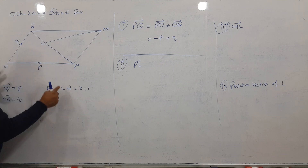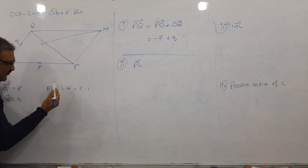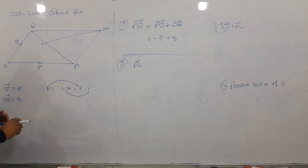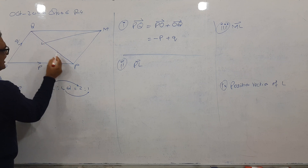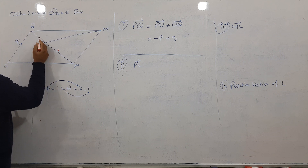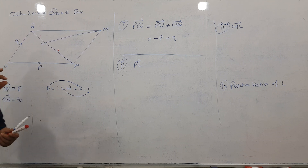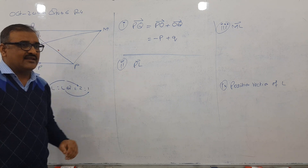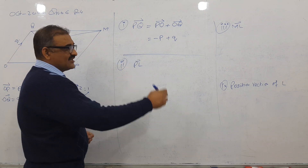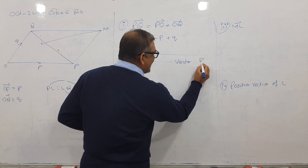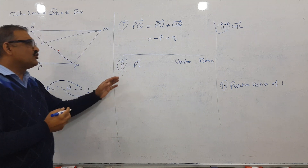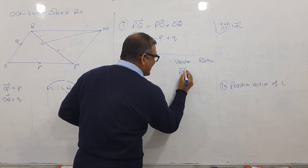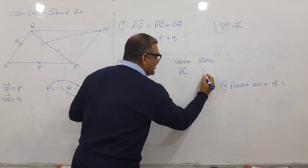Now for vector PL. Looking carefully, this vector has a ratio of 2 and this vector has a ratio of 1. So P to L is 2 parts and L to Q is 1 part. I will teach a technique called the vector ratio technique. Write two headings: first 'vector', second 'ratio'. Write the unknown vector PL under vector and its ratio 2 in front of it.